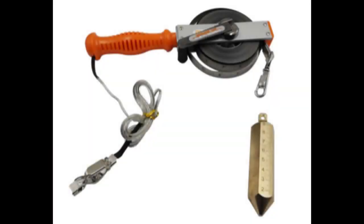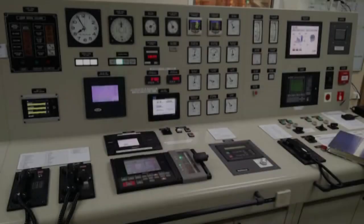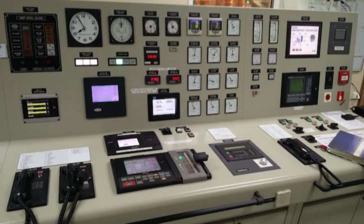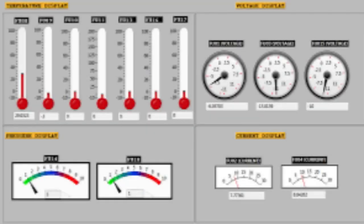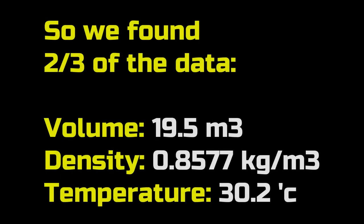The third data we need is to find the temperature of the fuel during the measurement. This can be found by using a measuring tape which also has a thermometer installed, or you can find the temperature reading on the instruments inside the engine control room. For example, it is 30.2 degrees Celsius. So we found all three of the three data points that we need.